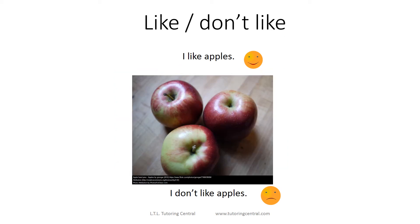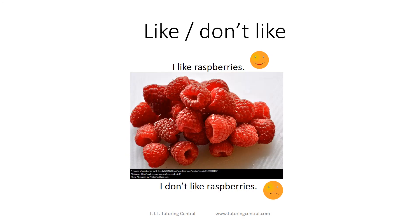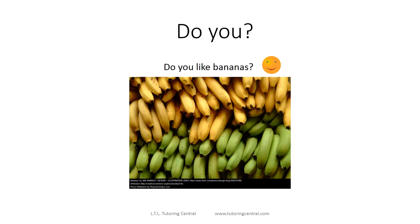A lot of you probably know apples. 'I like apples' or 'I don't like apples.' These are blueberries — 'I like blueberries' or 'I don't like blueberries.' Blueberries are easy to remember because they're the color blue. And finally we have raspberries. 'I like raspberries' or 'I don't like raspberries.'